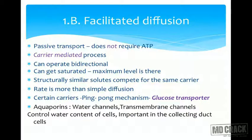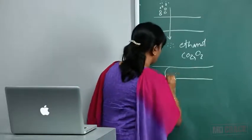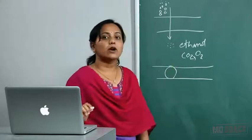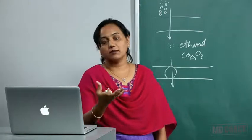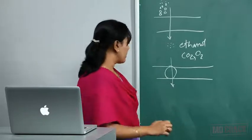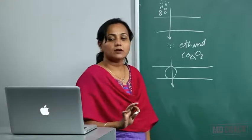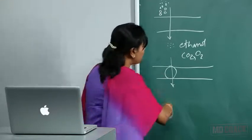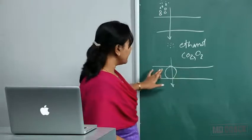Facilitated diffusion means you require something — you need someone to facilitate the movement. In facilitated diffusion, a carrier is required to transport the substance across the membrane. This is also a passive mechanism; no energy is required, and it can be bidirectional.